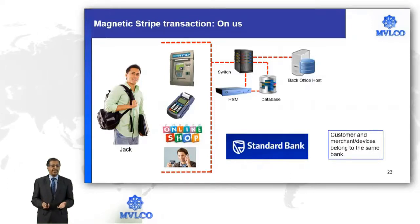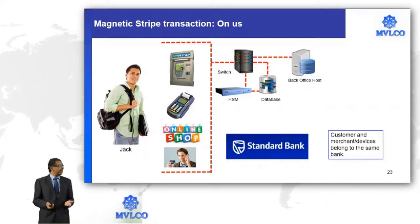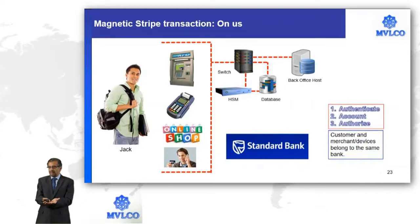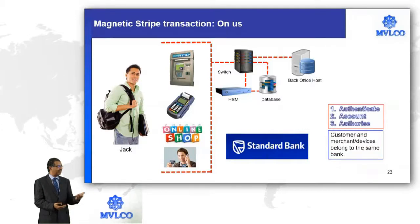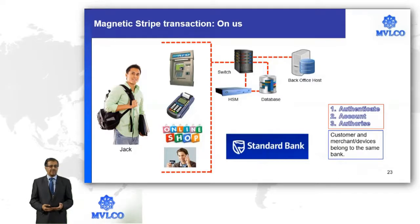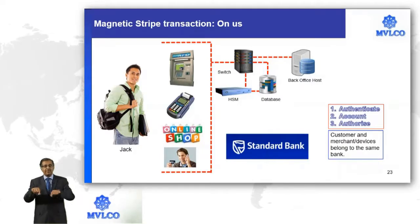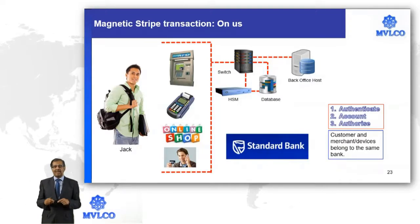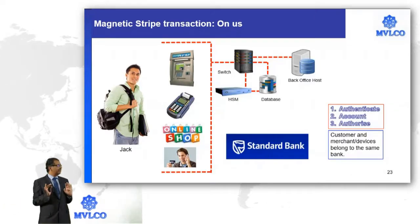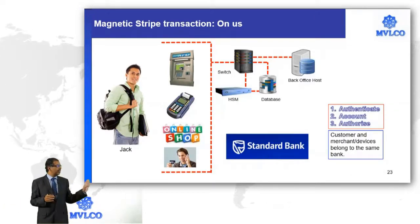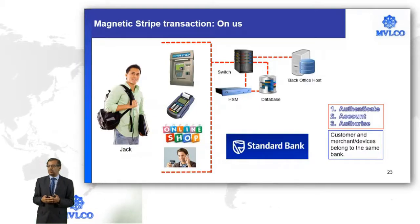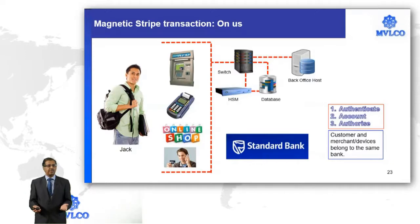At the ATM, the cash is generated and dispensed to the customer. So we have done the process of authenticating the card and the cardholder, then done the accounting at the back office before we issued the authorization. After the accounting, we debited the cardholder and issued the instruction of authorizing the transaction. Based on that, the dispensation of cash happened.